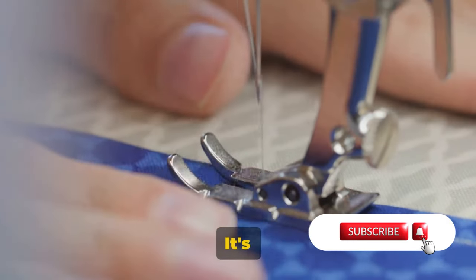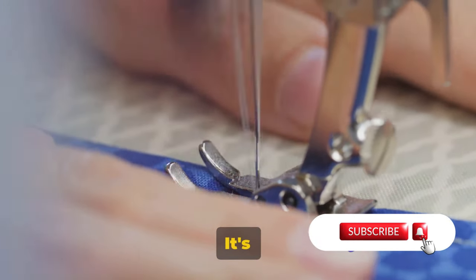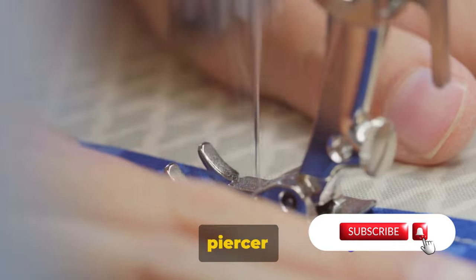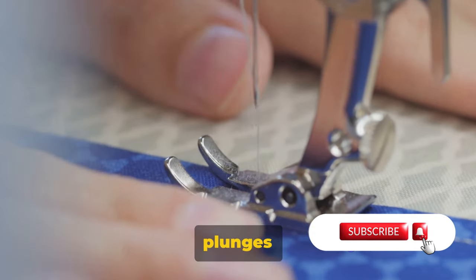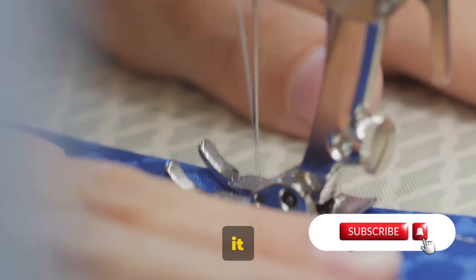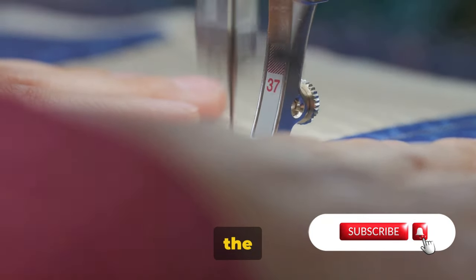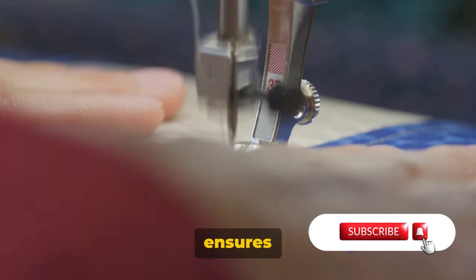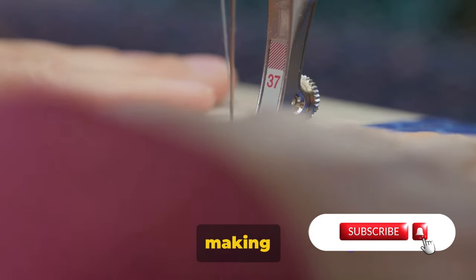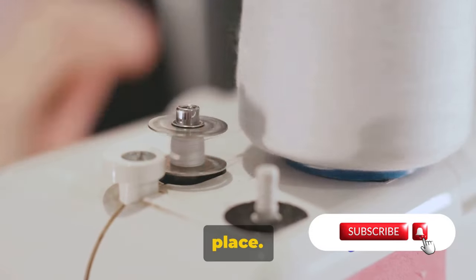First, we have the needle. It's not just a pointed piece of metal. It's the carrier of the thread, the piercer of the fabric. As it plunges down into the fabric, it carries with it the upper thread. This thread then interlocks with the lower thread from the bobbin, creating a stitch. The needle's role doesn't end here. It also ensures the precision of the stitch, making sure every thread is in its rightful place.